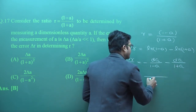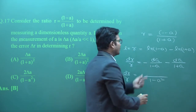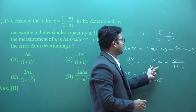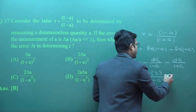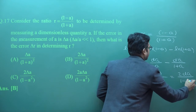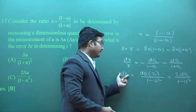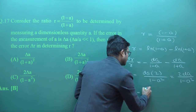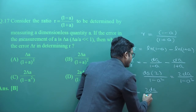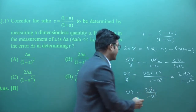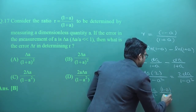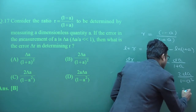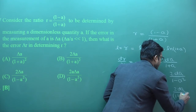Combining the terms: dR/R = dA × [(1 + A) + (1 − A)] / [(1 − A)(1 + A)] = 2 dA / (1 − A²). To find the error δR, we multiply both sides by R = (1 − A)/(1 + A). After cancellation, the result is δR = 2 δA / (1 + A)².